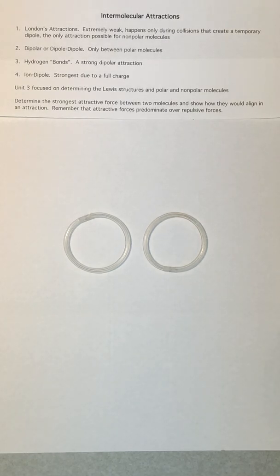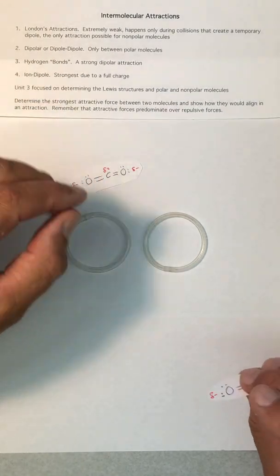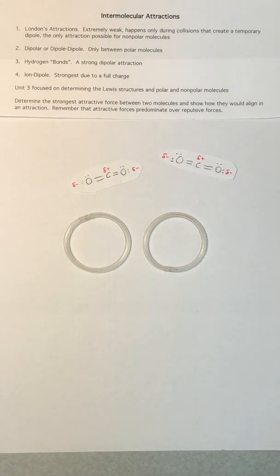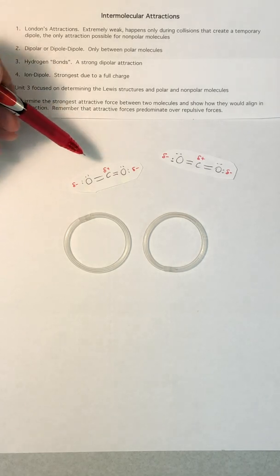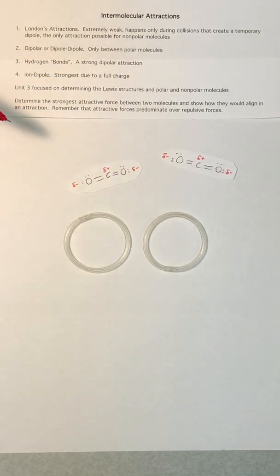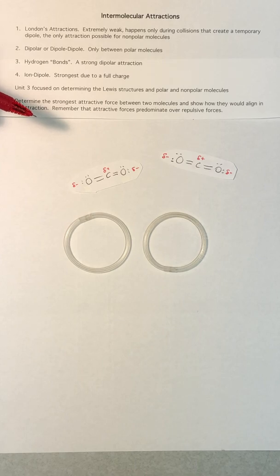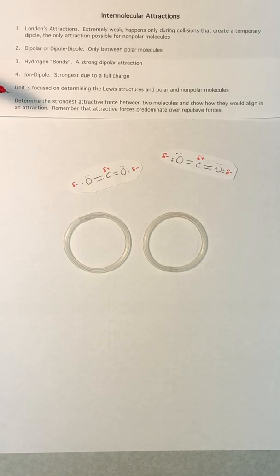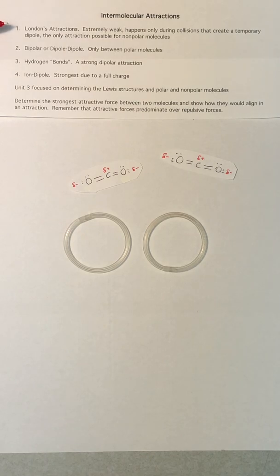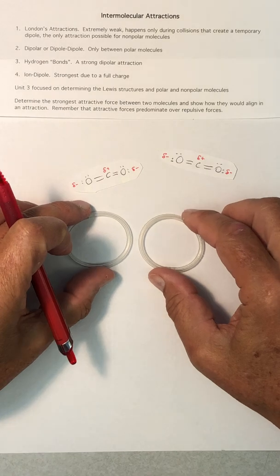We're going to look at some of the intermolecular attractions that are possible. Here are two molecules of carbon dioxide. CO₂ molecules are nonpolar — they have dipoles, but because the bond angles are 180 degrees these exactly counteract each other, leaving no net dipole. That's why carbon dioxide is a gas. London's attractions are extremely weak and happen only during a collision that creates a temporary dipole — they're the only attractive force possible for nonpolar molecules.